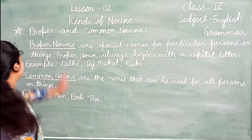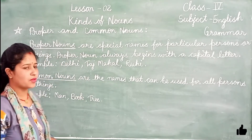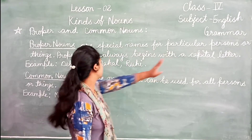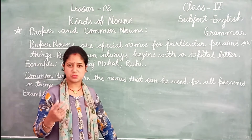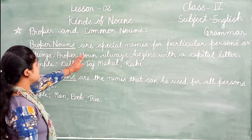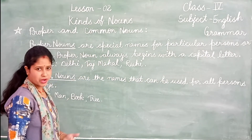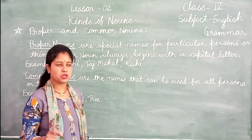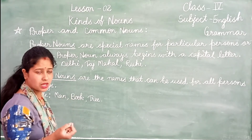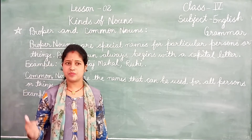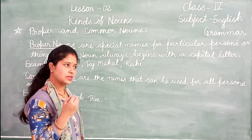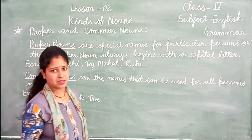Now we will read about proper and common nouns. Proper nouns are special names for particular persons or things. Proper nouns always begin with capital letters. They are names of particular persons, buildings, or famous things — for example, Danny (a particular city name) or Tashmen (a particular building or person's name).